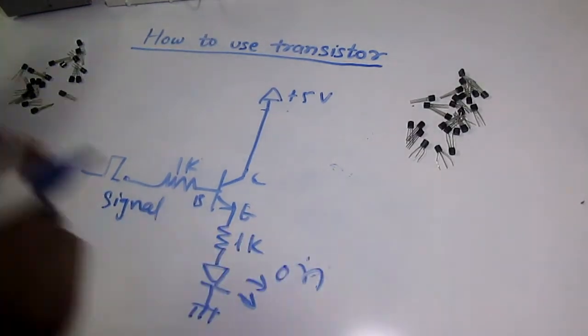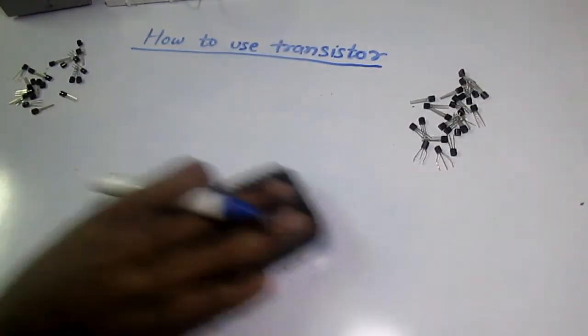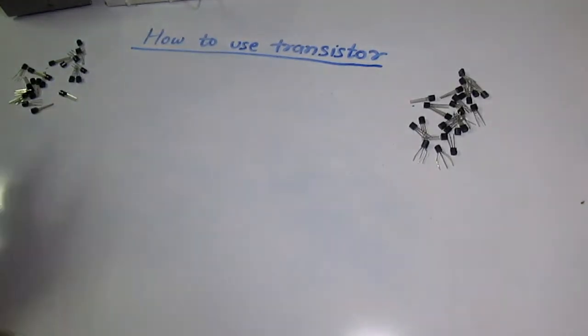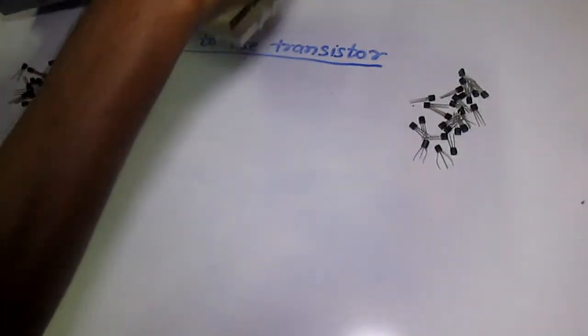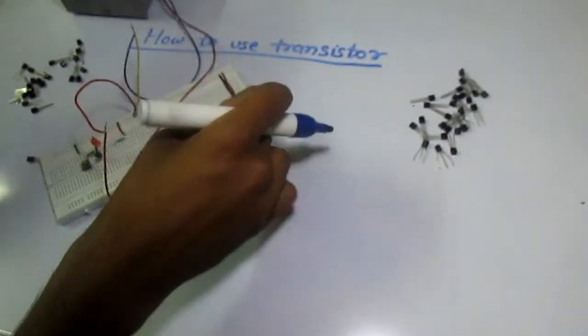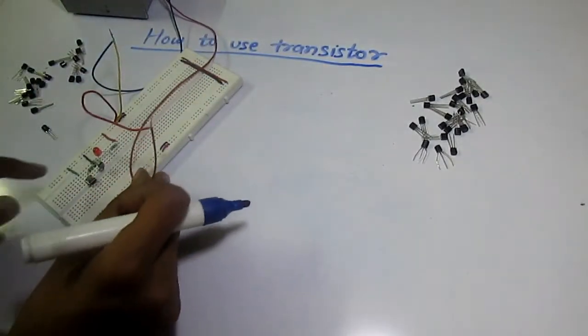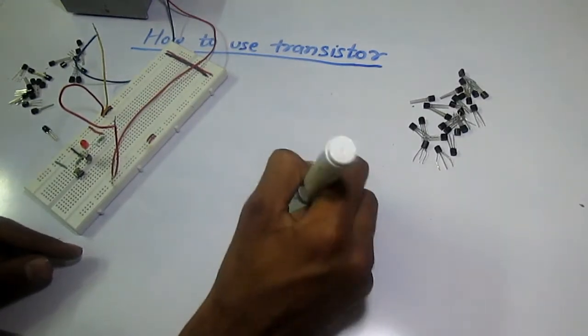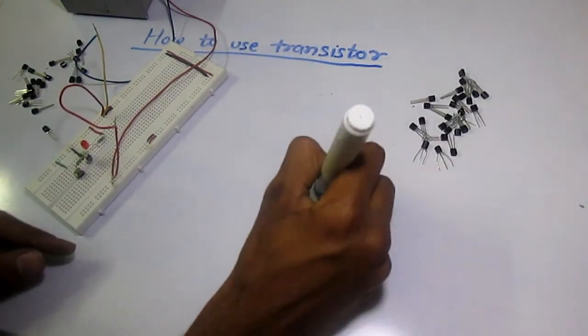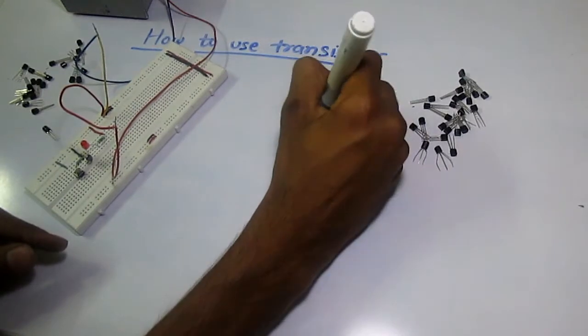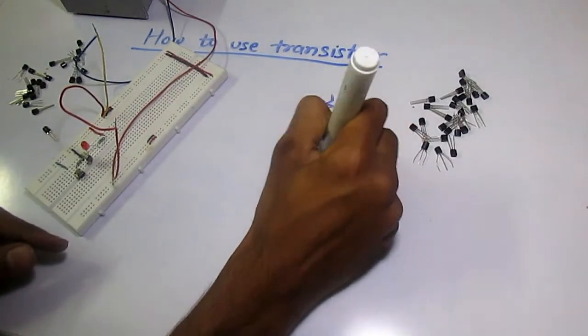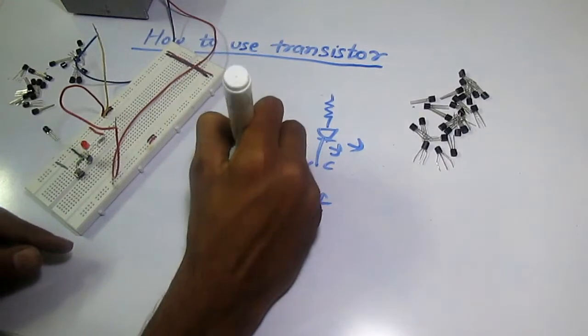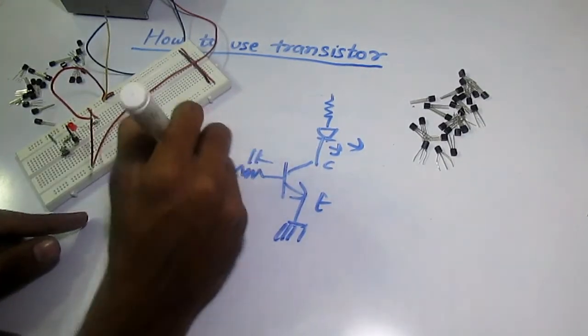I've made a little project so you can understand this very easily. Here is the project. If you look at the circuit diagram, I've connected ground to the emitter, connected the load to the collector, and connected a switch to the base.